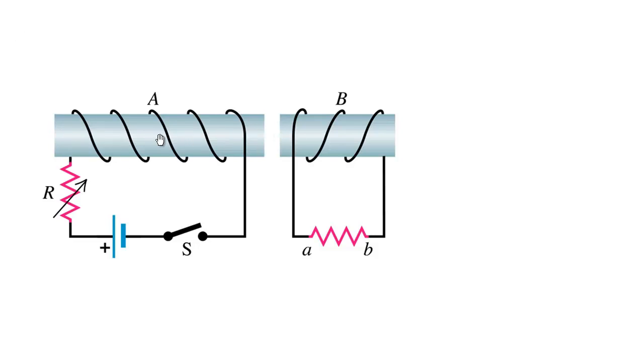Once this magnetic field is created inside solenoid A, it's going to pass through solenoid B, changing the flux experienced by B. So there will be an induced EMF in solenoid B. Even though they're not electrically connected, they're going to be connected magnetically.